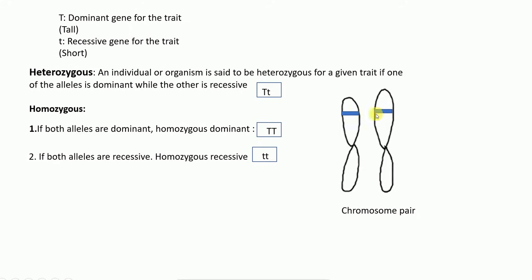In summary: in heterozygous organisms we get the tall plant because one dominant allele is enough to mask the recessive allele. In homozygous dominant, both alleles are dominant so we get the tall plant. In homozygous recessive, both alleles are recessive, so the phenotype of the plant will be short.